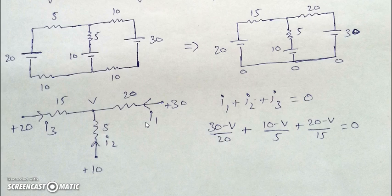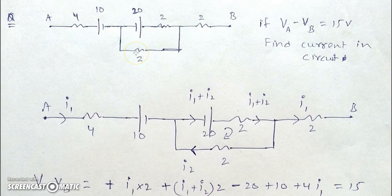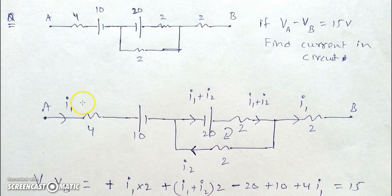This is another example where it is given that VA − VB = 15 volts, and we have to find the current through the circuit and through the 4-ohm and 2-ohm resistances. Whenever VA − VB is given, it indicates the direction of traversal — final minus initial — so A is the final point and B is the initial point. This means we move from B to A.